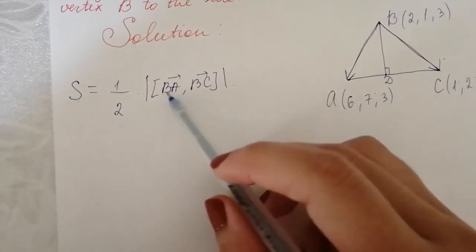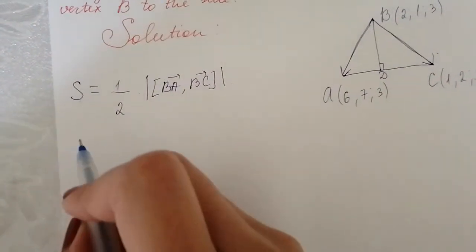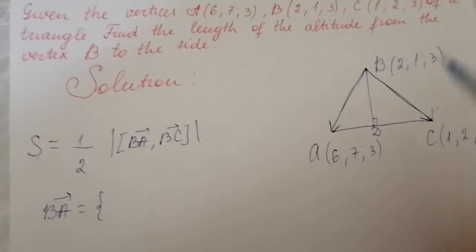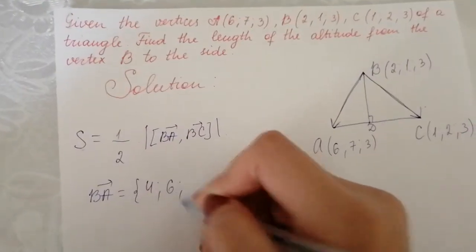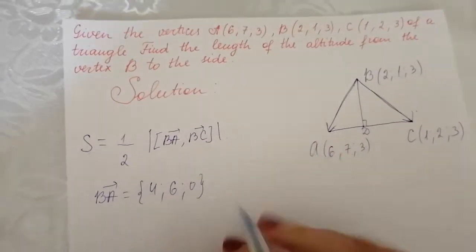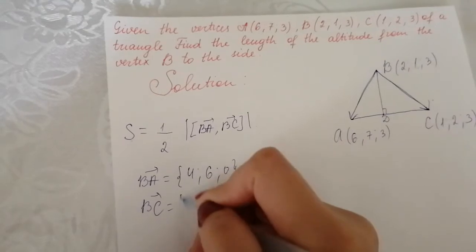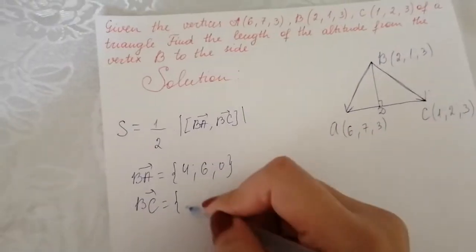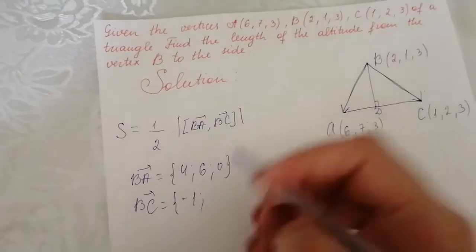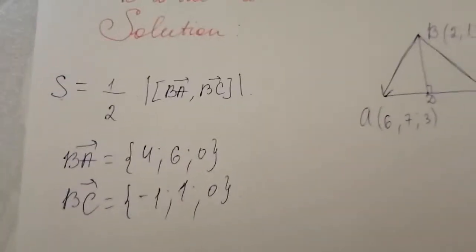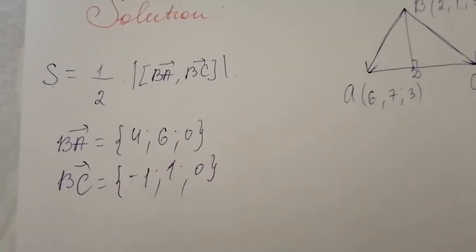We have to find the vector product of vectors BA and BC. First, let's find the coordinates of vector BA: 6 minus 2 is 4, 7 minus 1 is 6, 3 minus 3 is 0. Now let's find the components of vector BC: 1 minus 2 is negative 1, 2 minus 1 is 1, 3 minus 3 is 0. So BA = (4, 6, 0) and BC = (−1, 1, 0).